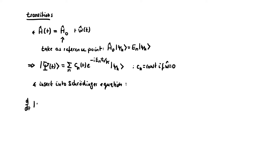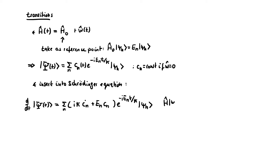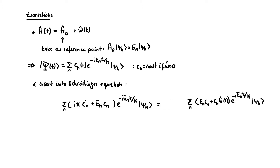As always, we first determine the two sides of the Schrödinger equation. For the time-derivative, we apply the product and chain rules, and so this gives us two terms. When we apply the Hamiltonian, we make use of the fact that the states psi_n are eigenstates of the static part, giving us again two terms. When we equate these two expressions, we see that one term on each side is identical and therefore can be cancelled.